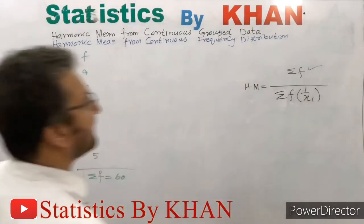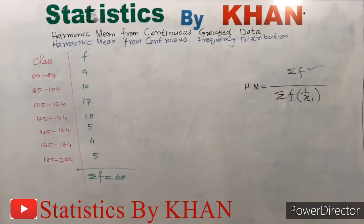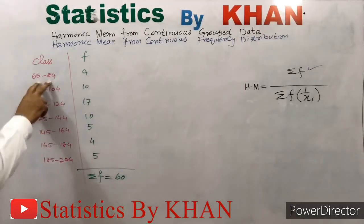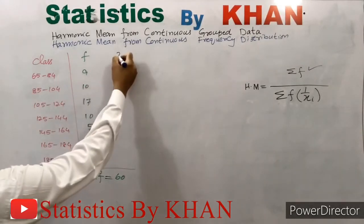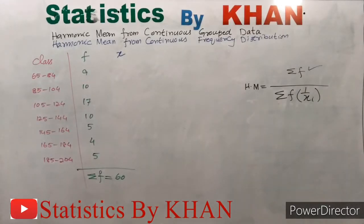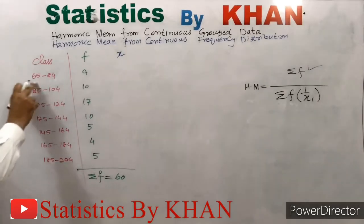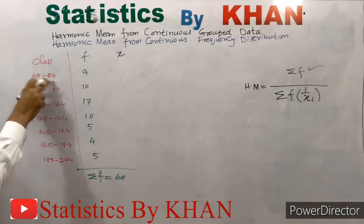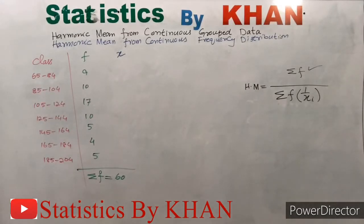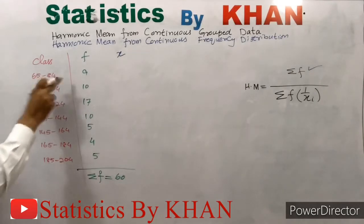To find 1/xi, we first need xi. Looking at the data set, there is no x column, so before that we need to find x. In continuous group data, x is equal to the class mark or class midpoint. We will find the class mark or class midpoint of each class, the same way we computed x in the arithmetic mean and geometric mean examples — by adding the two class limits and dividing their total by 2.